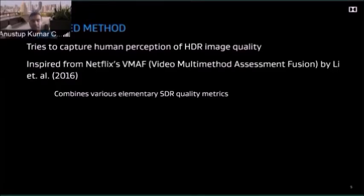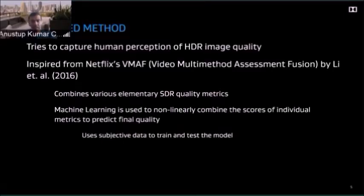What we need is a reliable quality metric that can accurately capture human perception of HDR image quality. Our work is inspired by Netflix's VMAF approach — Video Multi-Method Assessment Fusion — which combines elementary SDR quality metrics for images and uses frame differencing for temporal information. Machine learning is then used to non-linearly combine the scores of these individual metrics to predict final quality. The model is trained and validated on subjective data.